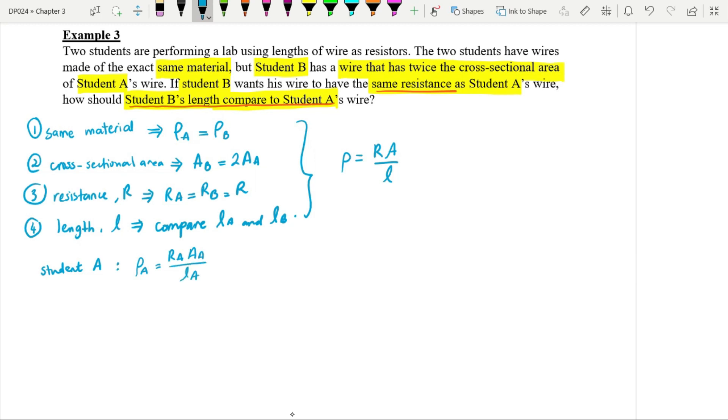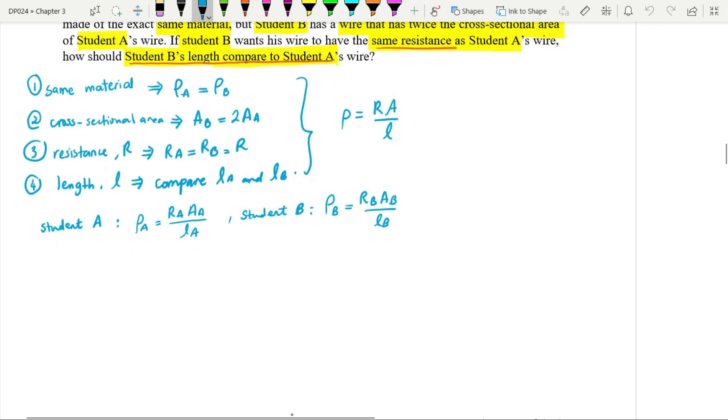If student B then, just label it. Rho B, resistivity of wire B, resistance B, area B, and also length B. So do one by one. Then we want to combine, because we want to compare length right? So the two equations, we need to combine them. How do we combine?